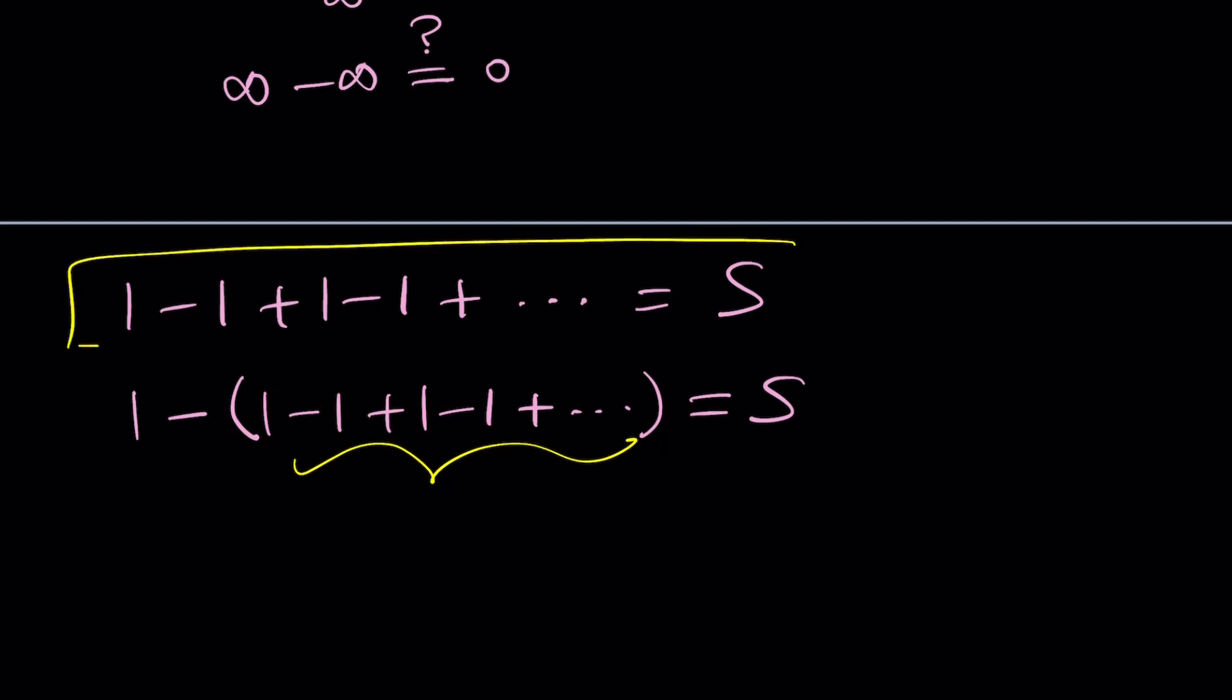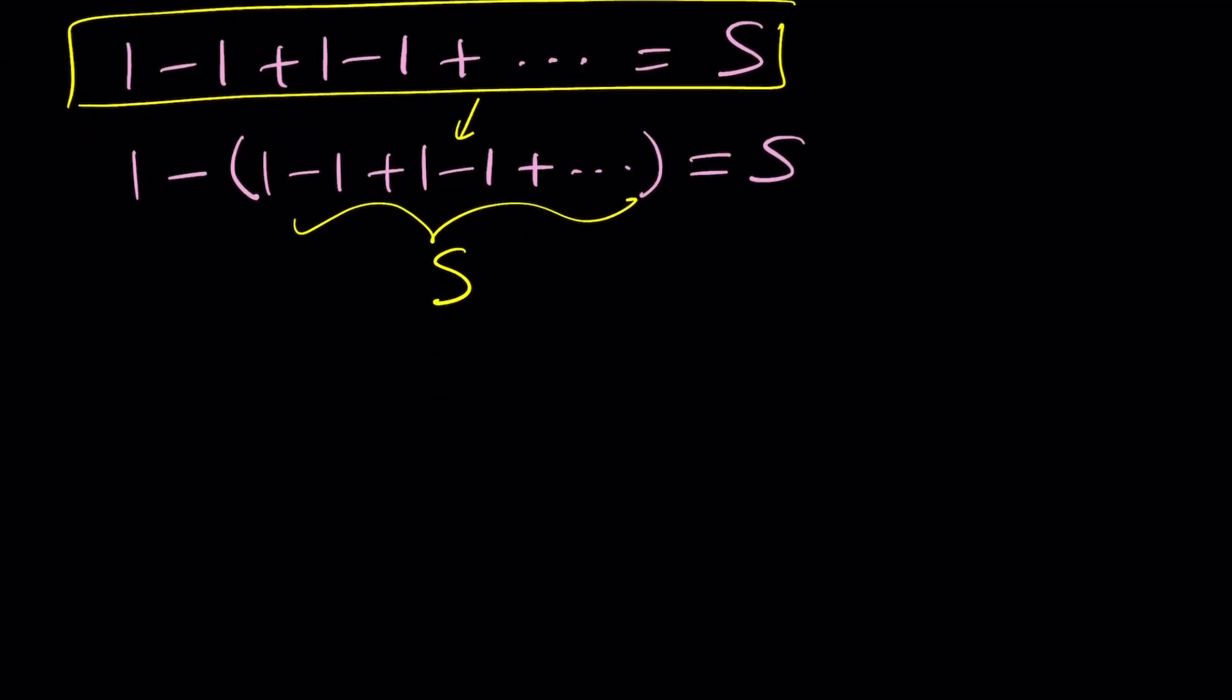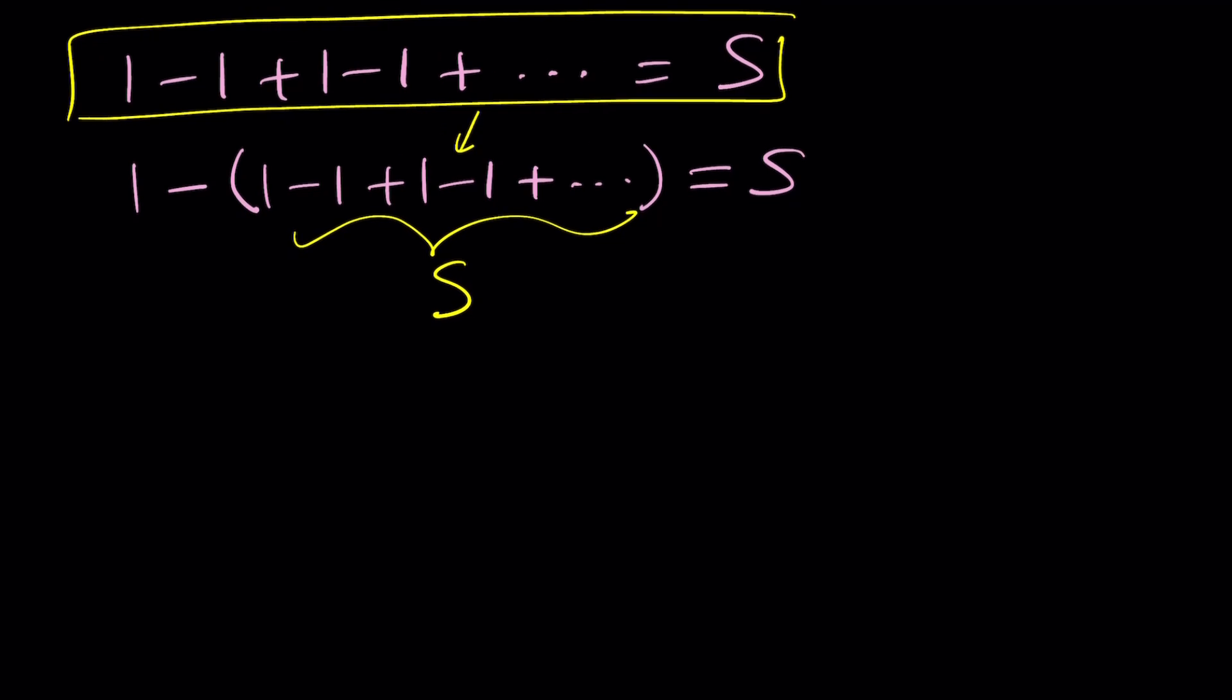Notice that the expression inside the parentheses is what? The same as S, the original sum. Take a look. This one is the same as this one. So this contains itself infinitely many times, but it's alternating. Then we get something like this. It's a linear equation. It's very easy to solve. 1 minus S equals S. And then we can add S to both sides. And 1 equals 2S. So S equals 1 half.